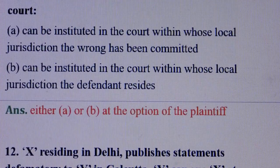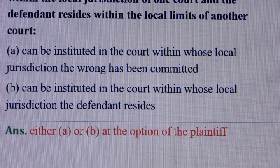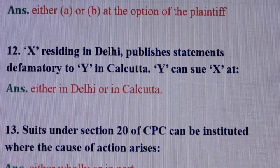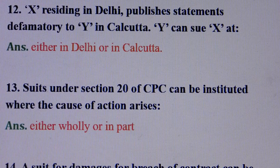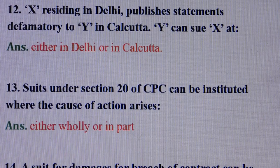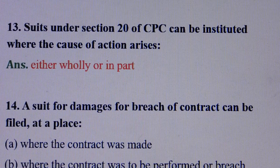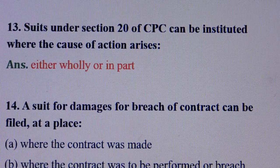The options mean: Option A — can be instituted in the court within whose local jurisdiction the defendant resides. Question number 13: Suits under section 20 of CPC can be instituted where the cause of action arises — answer is: either wholly or in part.